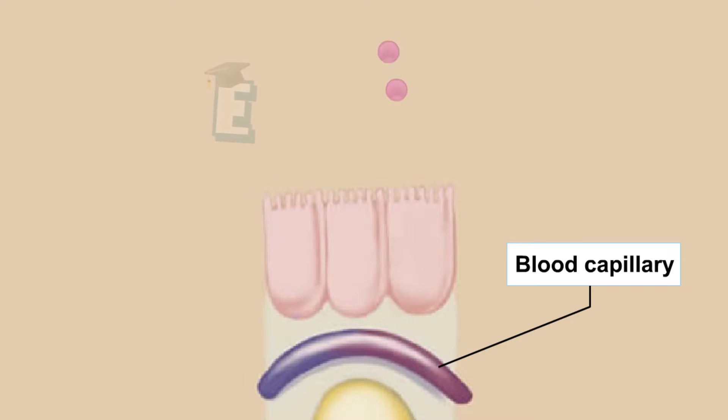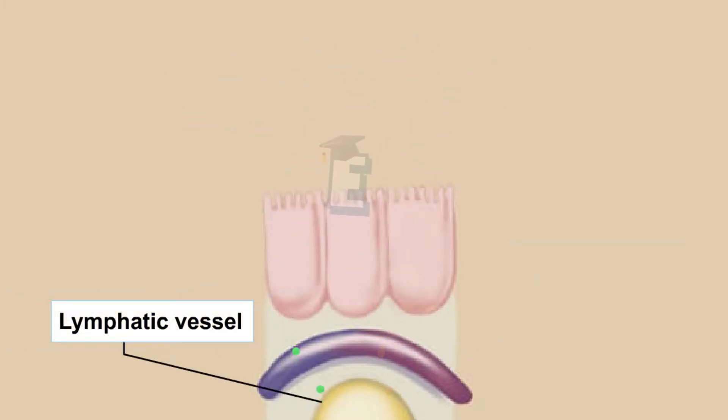If you look closely at the villi, blood capillaries and lymph vessels are aligned below it. Amino acids and glucose are absorbed and transported to blood capillaries to be distributed throughout the body. Fatty acids and glycerol are absorbed and transported to lymph vessels to be distributed throughout the body.